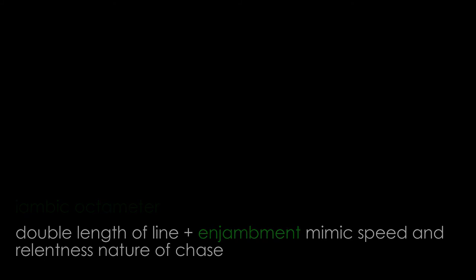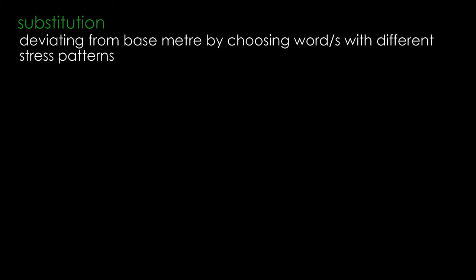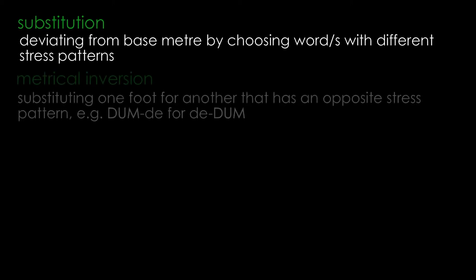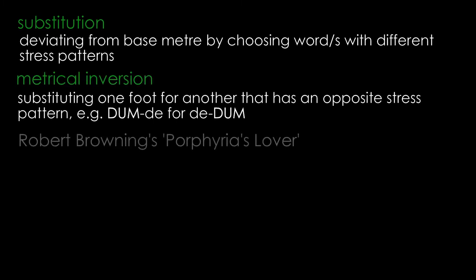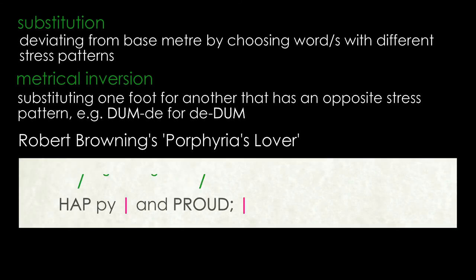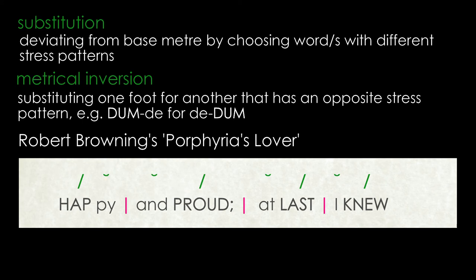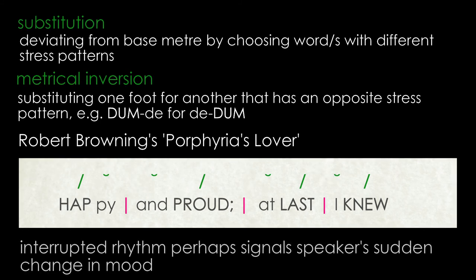Choosing words which have a different stress pattern than those which would fit the poem's base metre is called substitution. Sometimes a line of a poem written in iambic rhythm has one of the iambs substituted for a trochee, so that the rhythm goes dum-di rather than di-dum. This is also called metrical inversion. Browning does this in Porphyria's Lover: 'Happy and proud at last I knew.' The first foot is a trochee — dum-di — but see how he reverts to iambic rhythm di-dum for the rest of the line. Browning perhaps does this to interrupt the rhythm and signal his speaker's sudden change in mood as he realises that Porphyria does indeed love him.